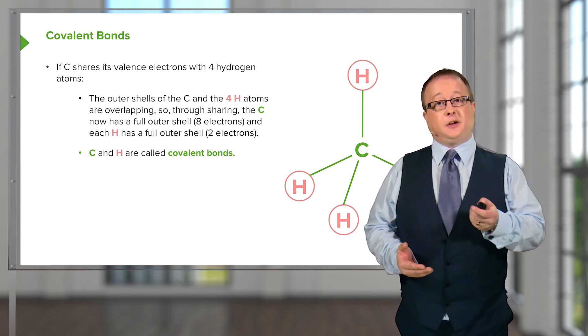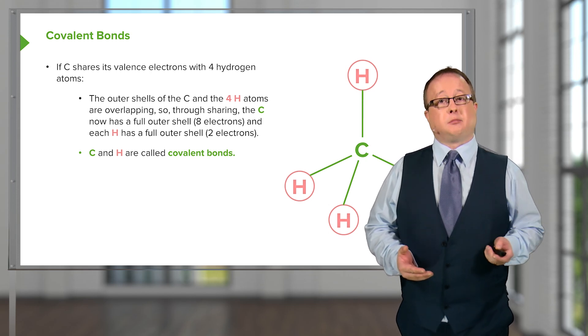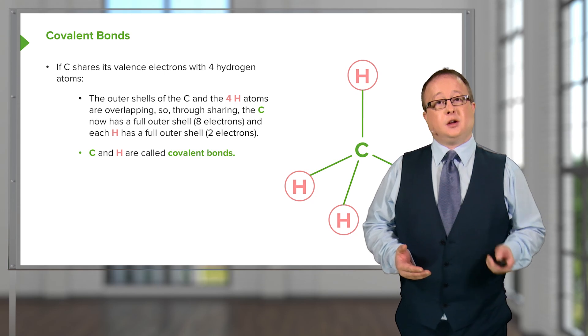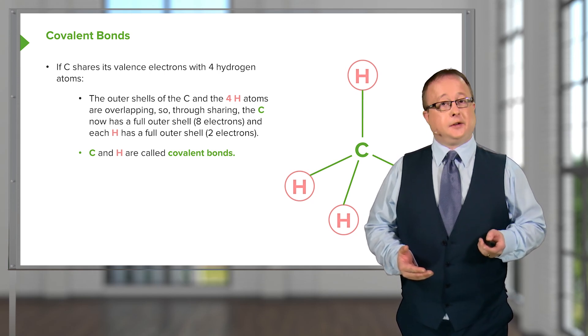However, in the case of covalent bonds, and this is very important for macroscopic properties, the bonds are directional. The carbon is bound to the hydrogen and nothing else.